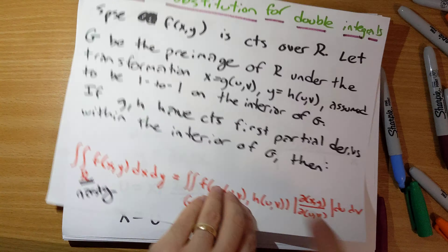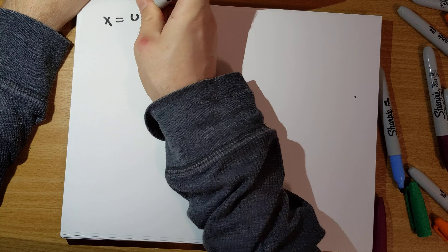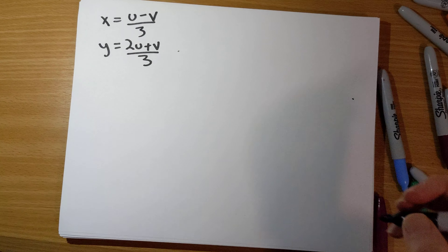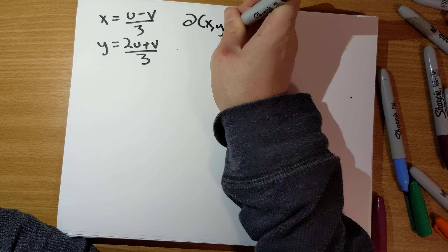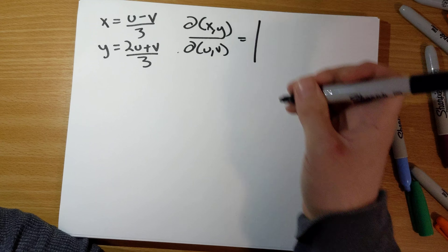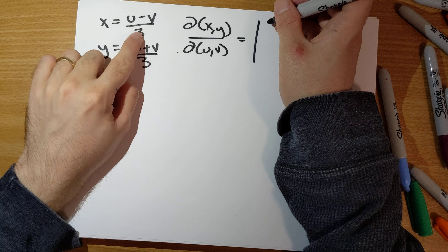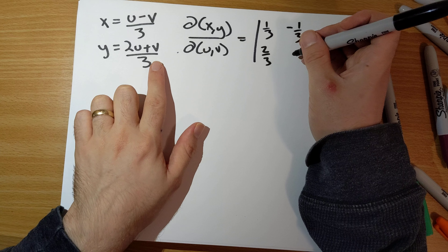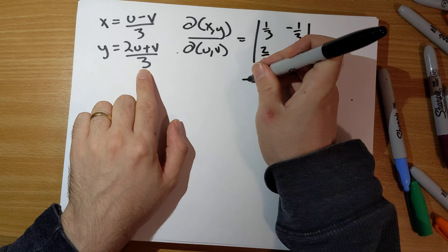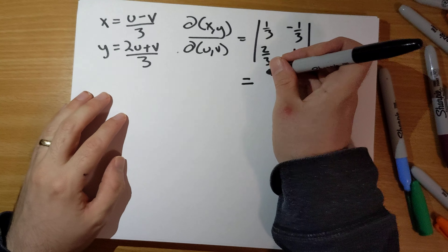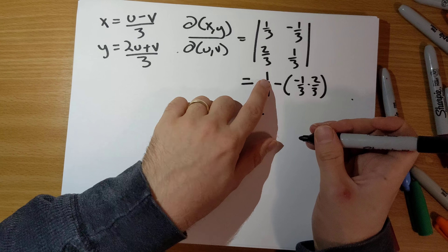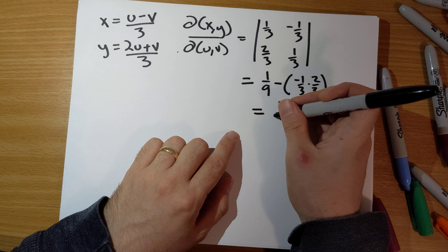Our change of variables — our transformation — is x equals (u minus v)/3 and y equals (2u plus v)/3. Our Jacobian is the determinant of the partial derivatives: ∂x/∂u = 1/3, ∂x/∂v = −1/3, ∂y/∂u = 2/3, ∂y/∂v = 1/3. So we get (1/3)(1/3) minus (−1/3)(2/3), which is 1/9 plus 2/9 equals 3/9 equals 1/3.